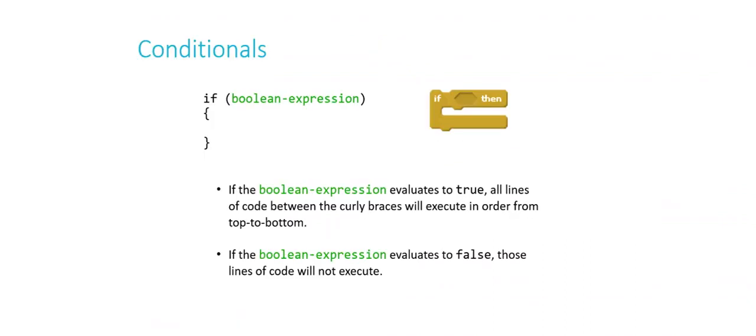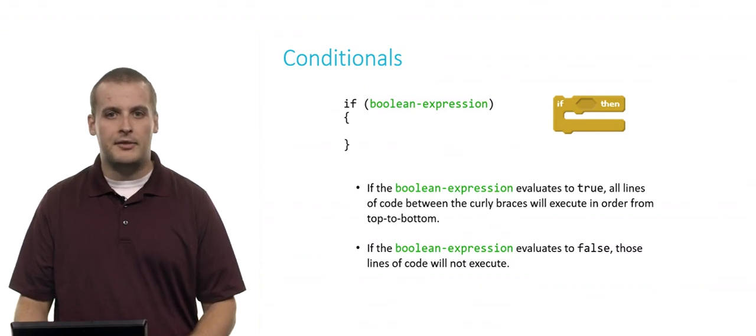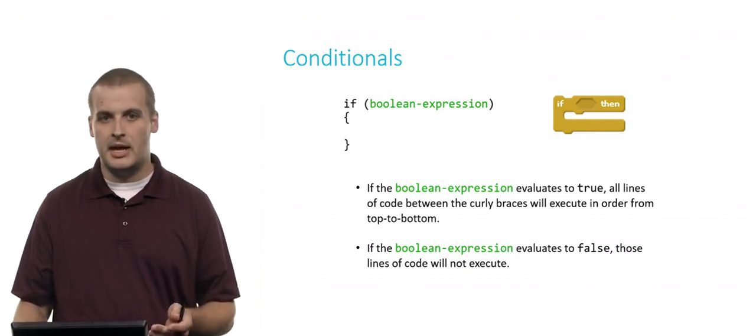If is a pretty simple conditional. If you recall from Scratch on the right here, you could fill in that hexagon with a Boolean expression, like if mouse down or if x is less than 10. Then if the condition was true, all of the code inside the puzzle piece would execute. Similarly, in C we have if Boolean expression, which I'm just using as a substitute for one of the Boolean expressions we've previously discussed.